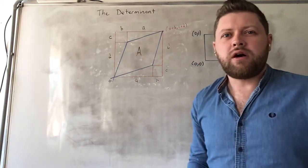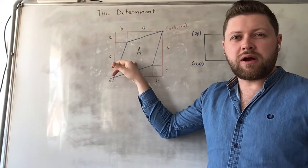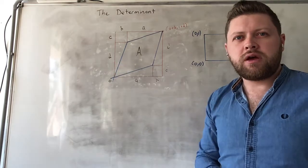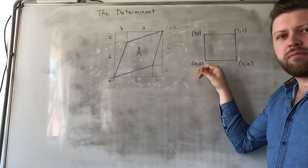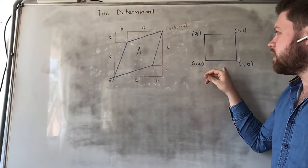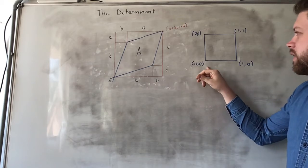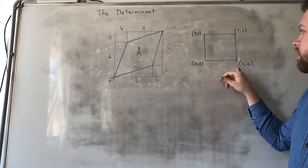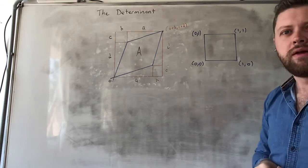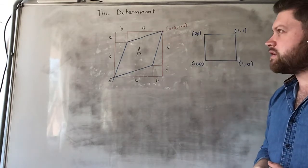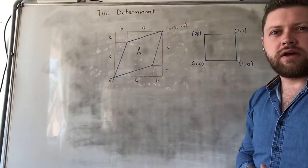Now we're going to talk about the area of our new transformed parallelogram. In the previous video I talked about how the points of this square — (0,0), (0,1), (1,0), and (1,1) — transform under a matrix transformation. We want to examine how the area of this square transforms in this situation.